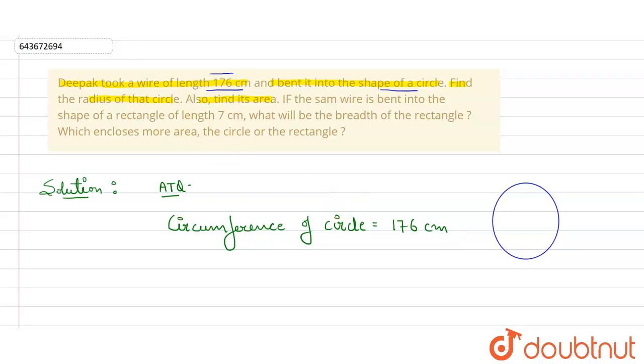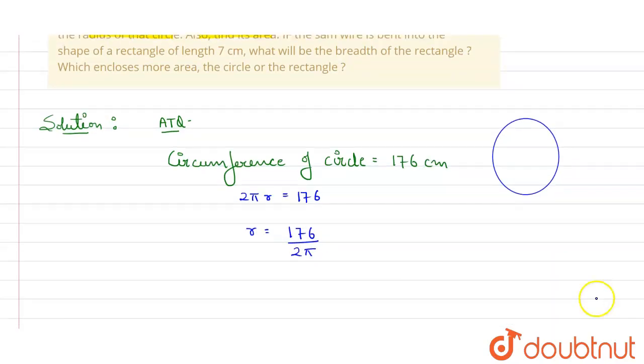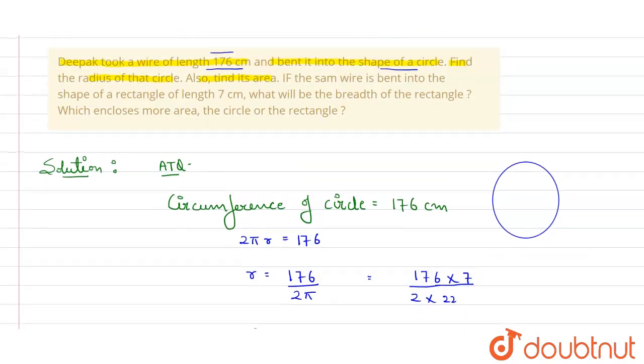Circumference is 2πr, we know this formula. It equals 176, so from here we can find the value of r. r will be 176 upon 2π. Now put the values here. Value of π is 22 by 7, so on solving this, value of my r will be 28 centimeter. So I got the value of r.